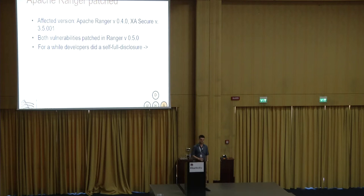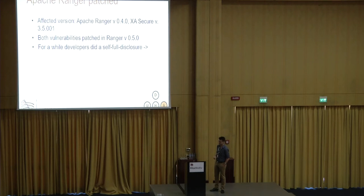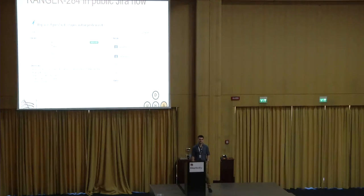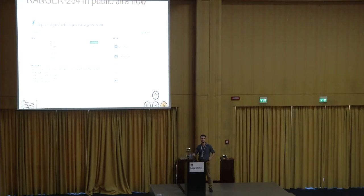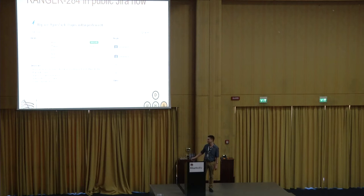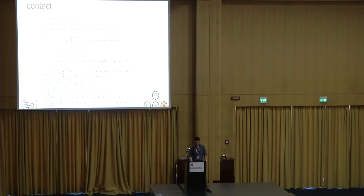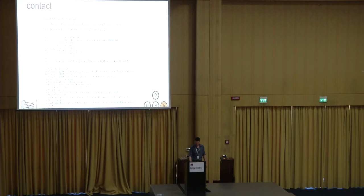The Apache Ranger vulnerabilities were patched — we responsibly disclosed them to the vendor. However, they did a self-full disclosure: they put the vulnerability content on their public JIRA. If anybody Googled for XSS or function-level access control in Ranger, the first result would be the public JIRA of these vulnerabilities. After we contacted them they deleted it, but it's still in some mailing list archives.